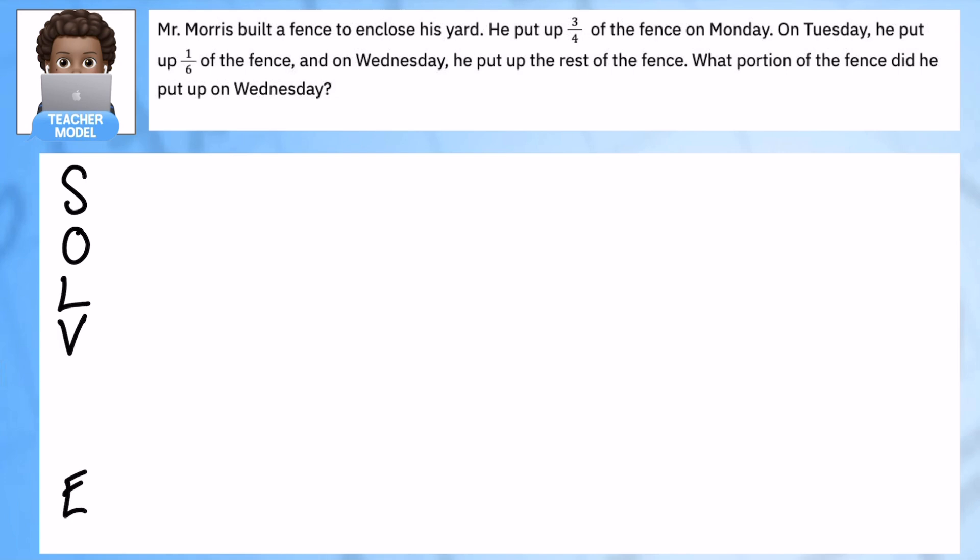We're going to study the problem. Mr. Morris built a fence to enclose his yard. He put up three fourths of the fence on Monday, on Tuesday he put up one sixth of the fence, and on Wednesday he put up the rest of the fence. What portion of the fence did he put up on Wednesday?